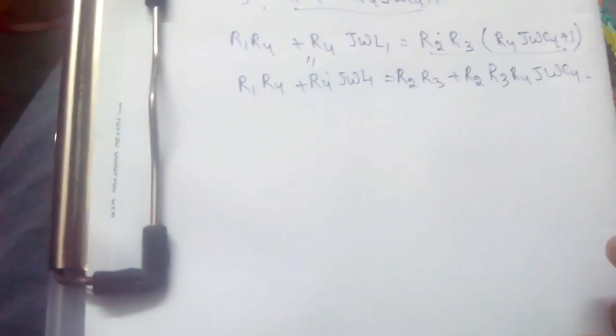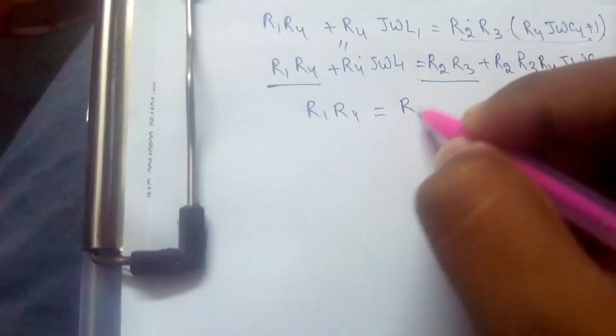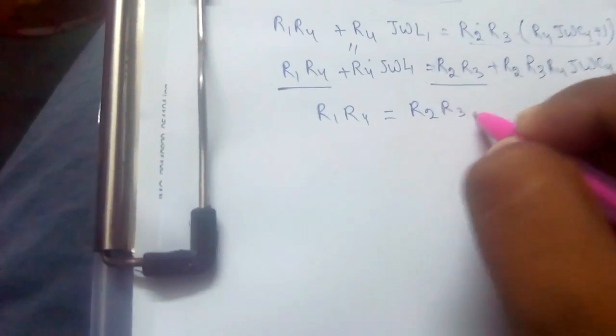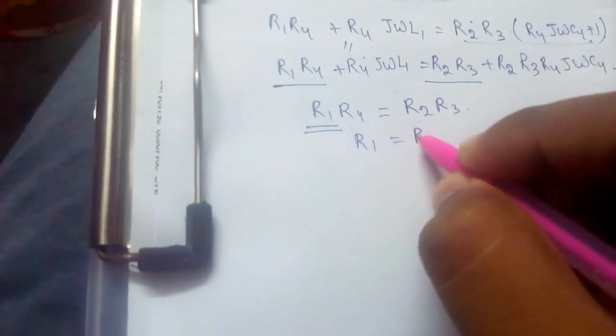Now equating the real parts, which contains j omega C4 plus R2 R3, we can find unknown resistance R1. Therefore, R1 would be R2 R3 divided by R4.